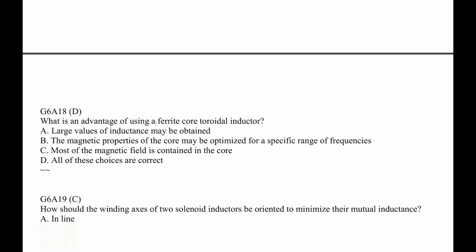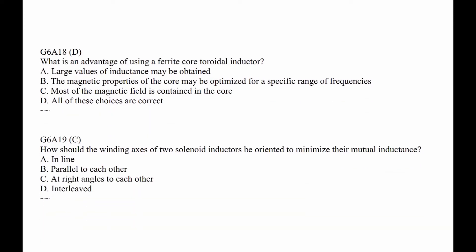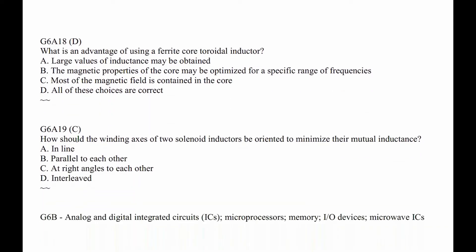G6A18. What is an advantage of using a ferrite core toroidal transformer? Well, size. Large values of inductance may be obtained — that's true. The magnetic properties of the core may be optimized for a specific frequency range — that's true, because there are different cores. So those two are true, making D the answer.